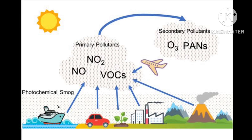These chlorine sinks — formed when NO₂ and CH₄ react with ClO — prevent much ozone depletion by not allowing chlorine radicals to break down more ozone.